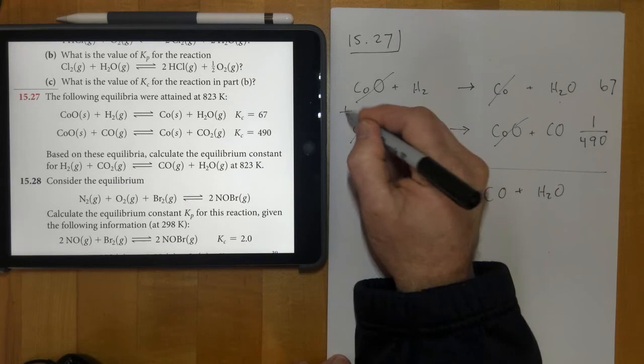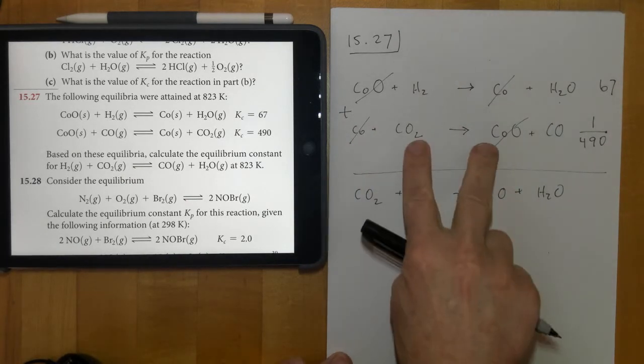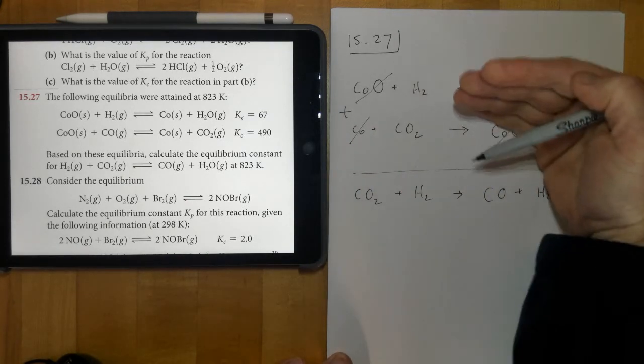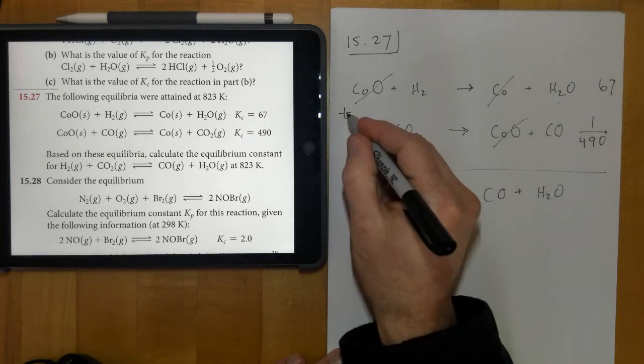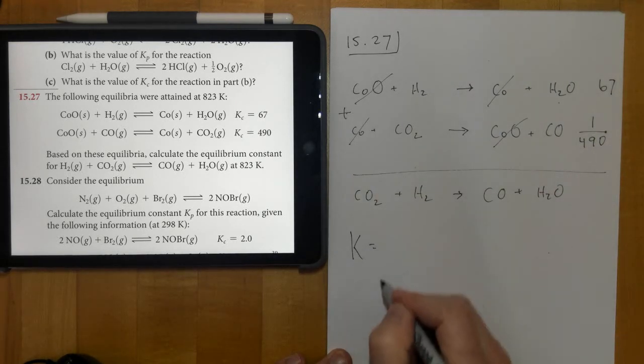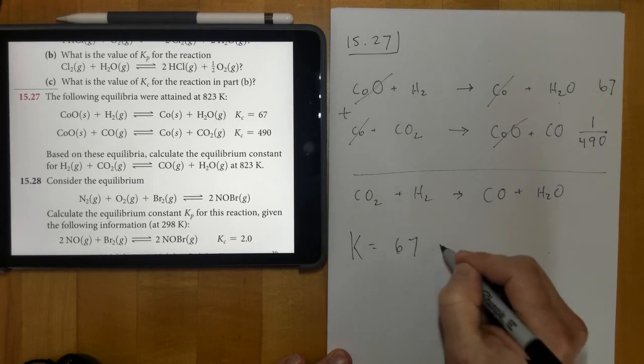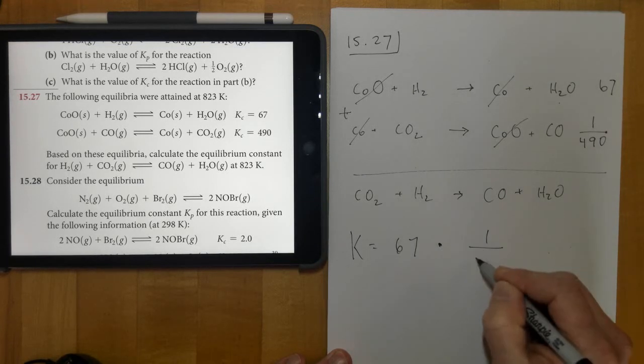And so by adding these two reactions together, first we manipulated this one, and then we added those two reactions together, we get this one. And when you add two reactions together, to find the K for the new reaction, we'll take the two Ks and we'll multiply them together.